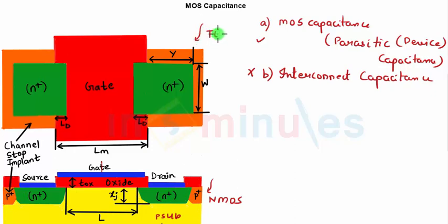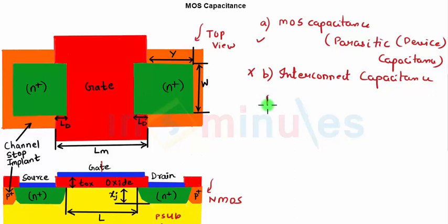This is the top view of the NMOS showing the gate, diffusion regions, width W of the diffusion, and length of diffusion. There is some portion of the source that overlaps with the gate and some portion of the drain that also overlaps with the gate, denoted by length LD, and they are both the same due to symmetry. So the total channel length L equals LM minus twice LD.